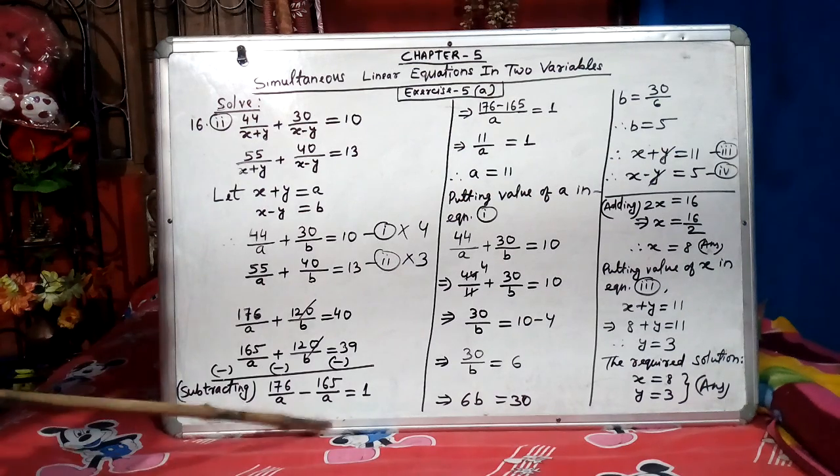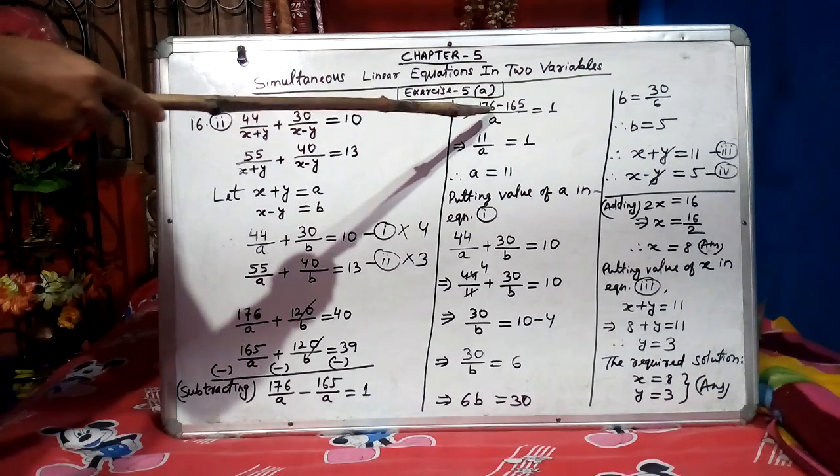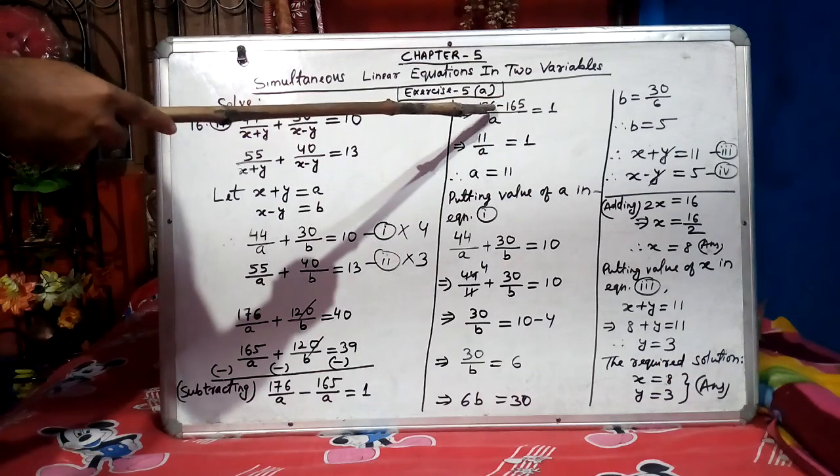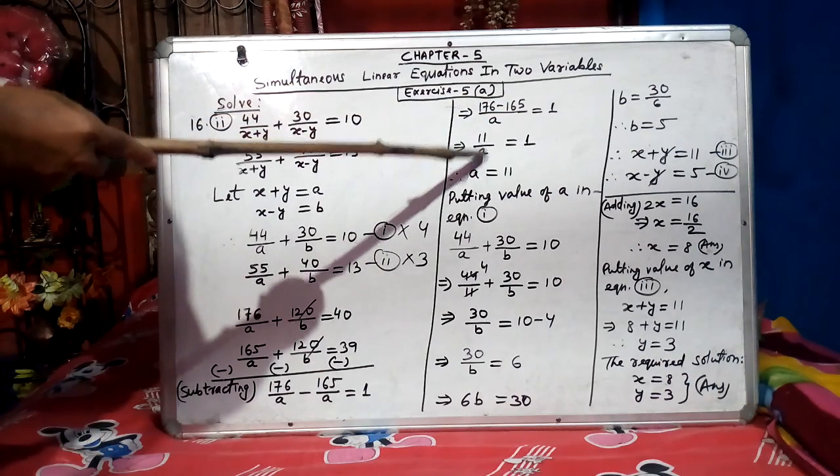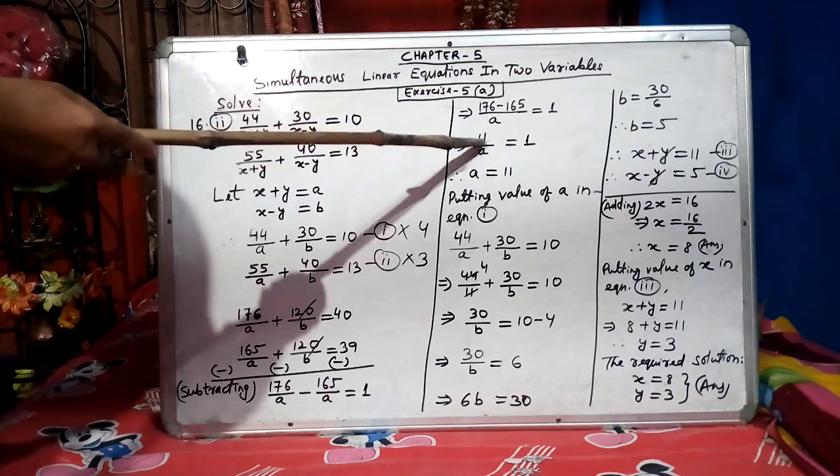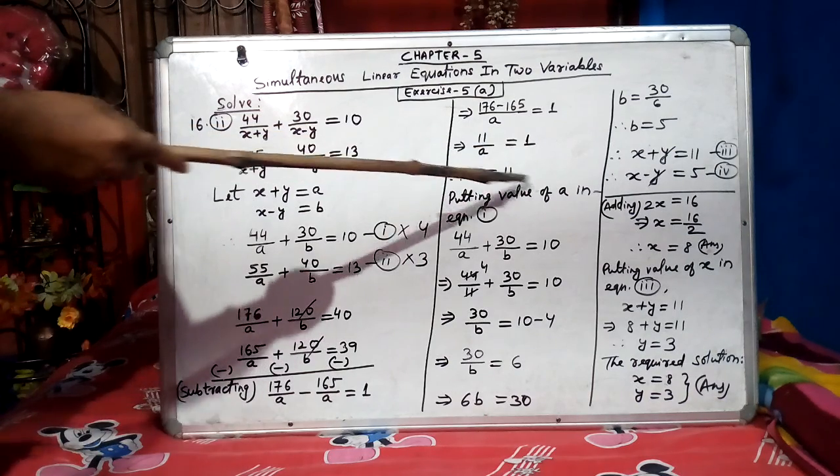After LCM, a, a, LCM is a. And our result is 176 minus 165 equal to a. 176 minus 165 is 11 by a equal to 1. A ones are a, 11 ones are 11. So a equal to 11.